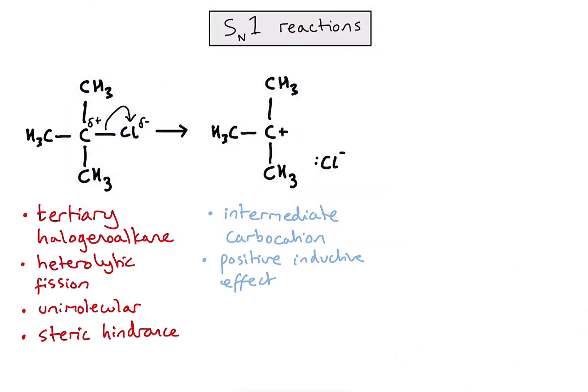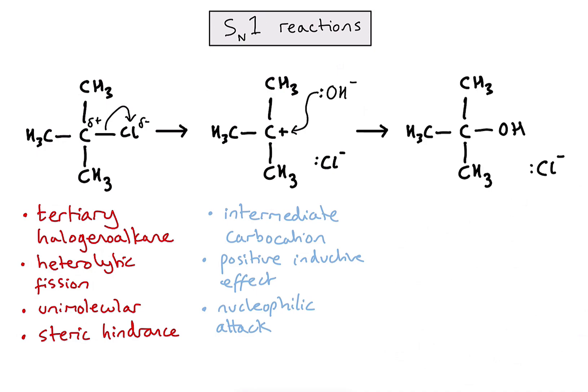We haven't drawn our nucleophile yet. In this case we're doing the reaction with sodium hydroxide, so floating around in solution are negative hydroxide ions. A negatively charged species and a positively charged species will attract each other. I represent the formation of a bond going from the lone pair of electrons on my oxygen to the carbon in my carbocation. Because the hydroxide ion has a negative charge and is attracted to a positive species, we describe this as nucleophilic attack, where hydroxide is the nucleophile — it is positive-charge-loving and forms a bond with the carbon.